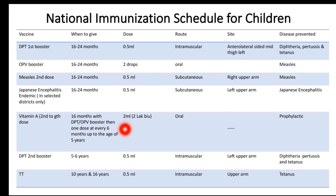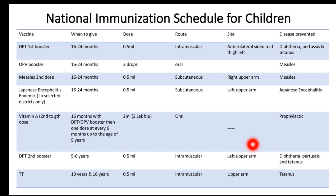The DPT second booster is given at 5 to 6 years of age, 0.5 ml intramuscularly in the upper arm. TT (Tetanus Toxoid) is given at 10 to 16 years of age, 0.5 ml intramuscularly in the upper arm. TT is also given during pregnancy — two doses in the first and second trimester — with a 3-year gap if those doses have been given. This completes the immunization schedule chart for our country.